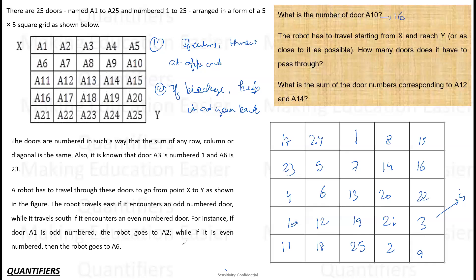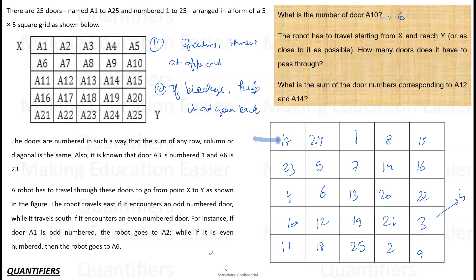Second question: the robot has to travel from X and reach Y or as close as possible — how many doors does it pass? It enters from X reading 17, which is odd — go East. 24 is even — go South. Then East, East, South, South, East. It stops here. Counting the doors: one, two, three, four, five, six, seven, eight — it crosses 8 doors to reach as close as possible. Third: what is the sum of door numbers corresponding to A12 and A40? A12 is 6, A40 is 20. The sum is 26.